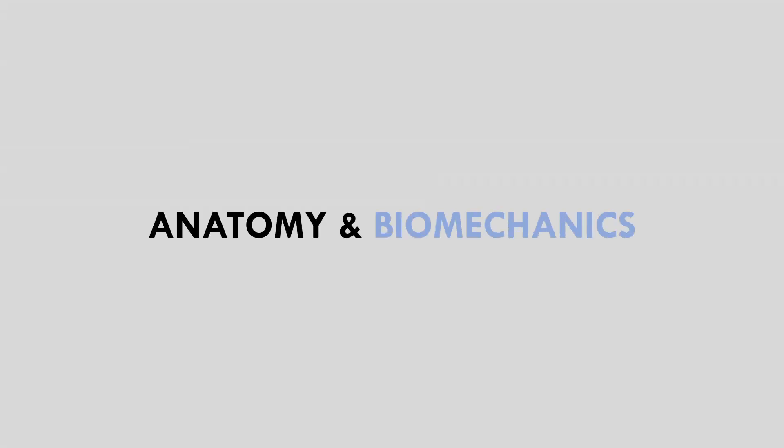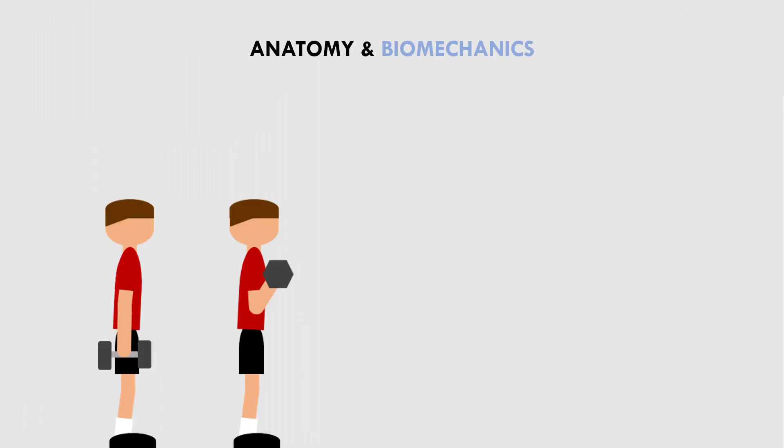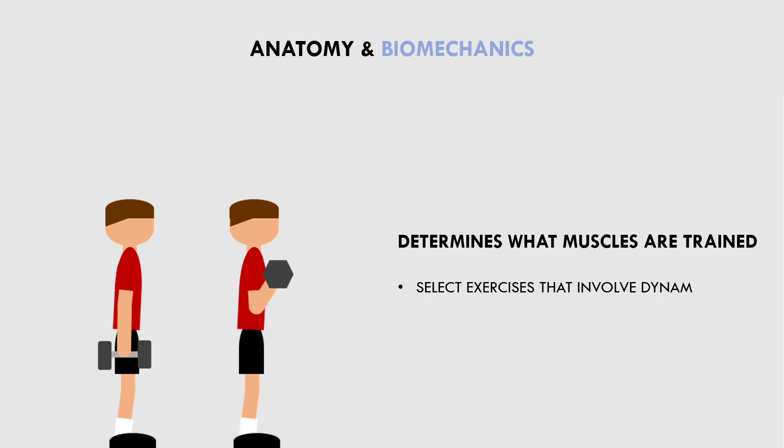First is anatomy and biomechanics of the target muscle. This is the most important indicator because it determines what muscles will be trained in the first place. We need to select exercises that actually require the muscle we are trying to train to dynamically contract against resistance. If we don't consider anatomy and biomechanics of the target muscle, we may not be training it at all. So first and foremost, make sure the exercise involves the target muscle as a prime mover.